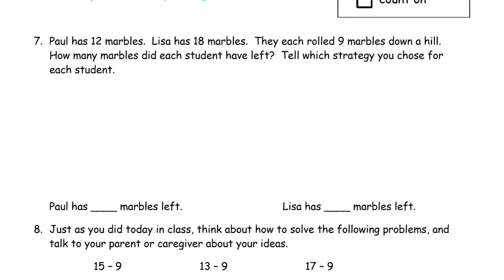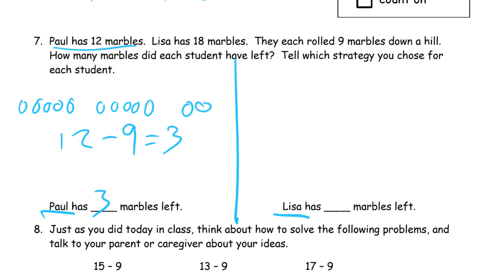Paul has 12 marbles. Lisa has 18 marbles. They each rolled 9 marbles down a hill. How many did each student have left? So, Paul has 12 marbles. We're going to have two problems here, one for Paul and one for Lisa. Paul has 12 marbles. 1, 2, 3, 4, 5, 6, 7, 8, 9, 10, 11, 12. They each rolled 9 down the hill. 12 and 9 are pretty close. We did that one already, right? 10, 11, 12. That's 3.